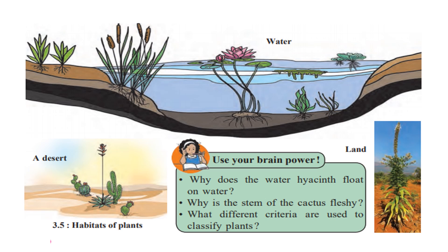Why is the stem of the cactus fleshy? The cactus grows in desert regions where there is a lack of water, so the cactus plant stores water in its stem — that is why the stem is very fleshy. What different criteria are used to classify plants? We have learned about the different ways of classifying plants. Go to the lesson and you will get your answer. To check your answer, visit our website at jkacademypro.com.